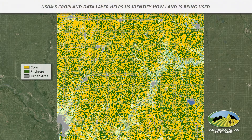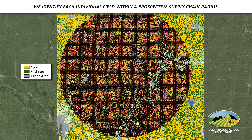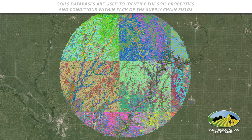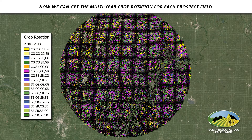SRC has two primary components. The first component is a stover supply chain prospecting tool. The prospecting tool leverages the best publicly available information to identify field boundaries, crop rotations, subfield yield variation, and sustainable removal limits for each soil in each field within a prospect supply chain.